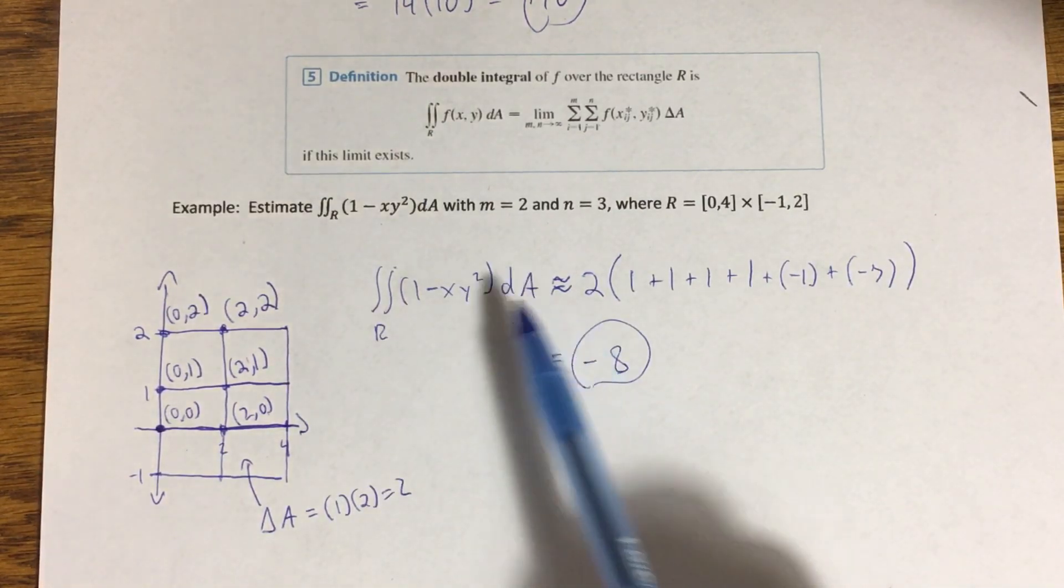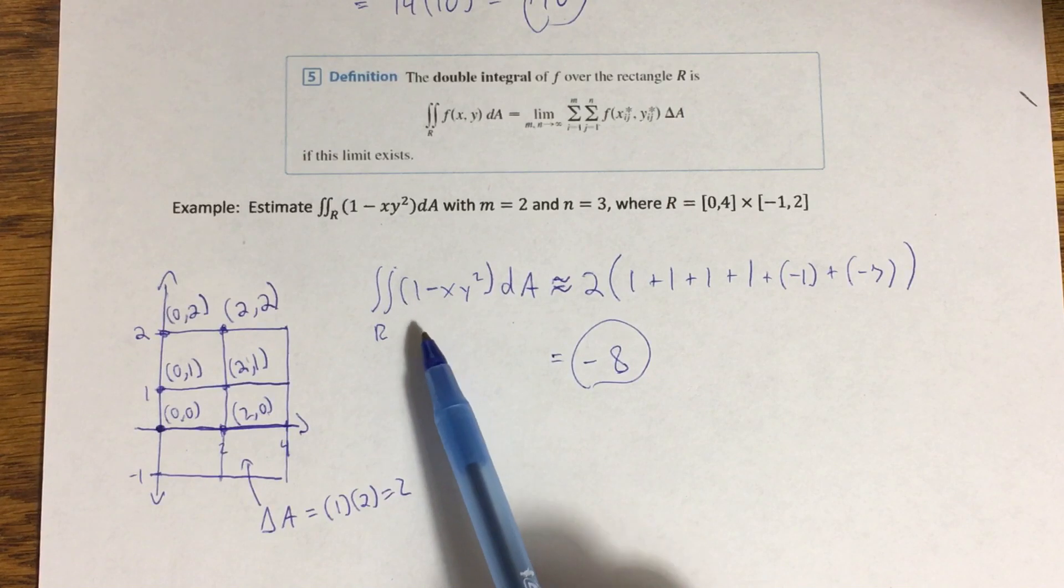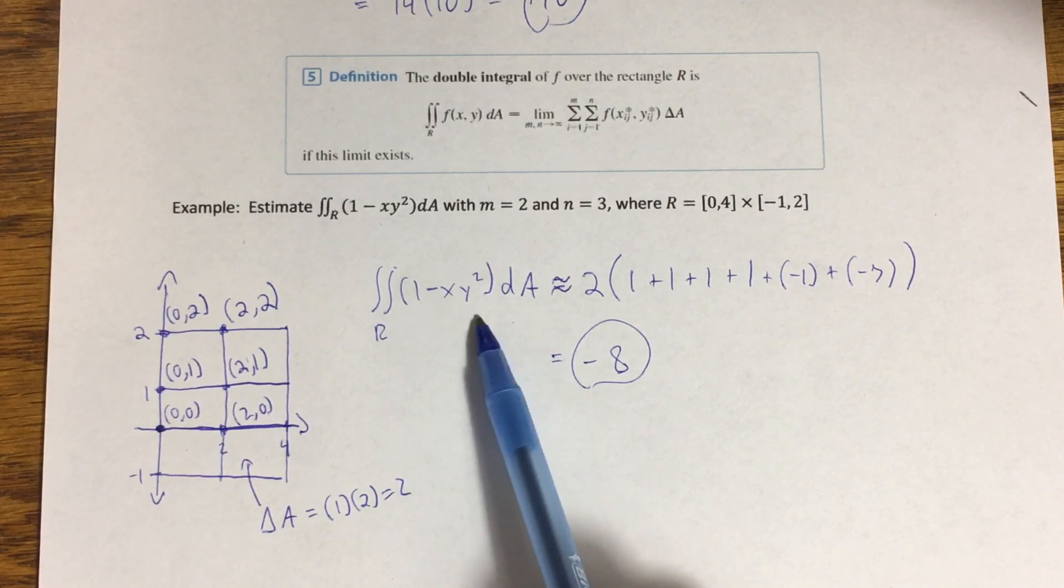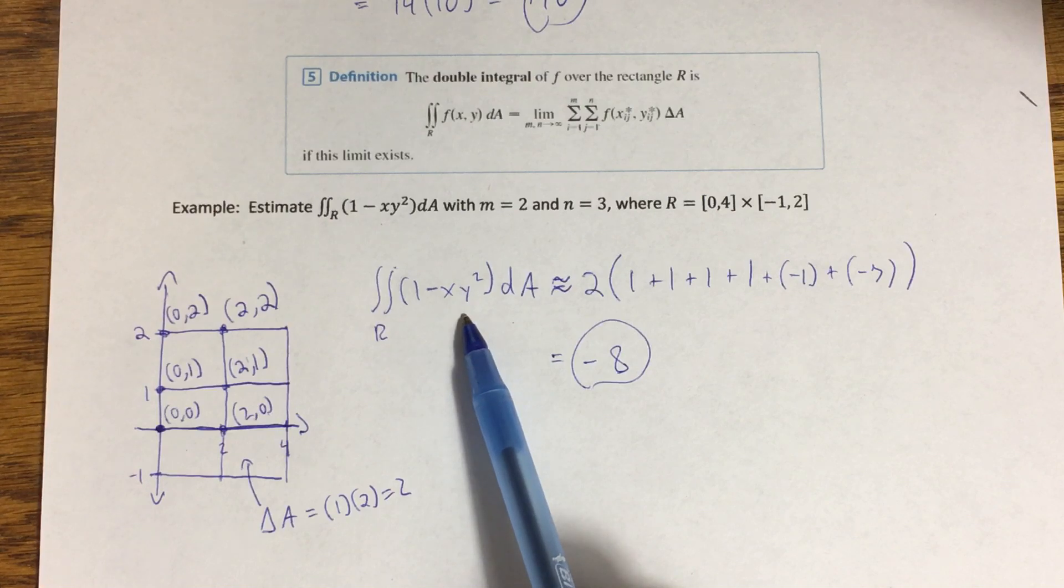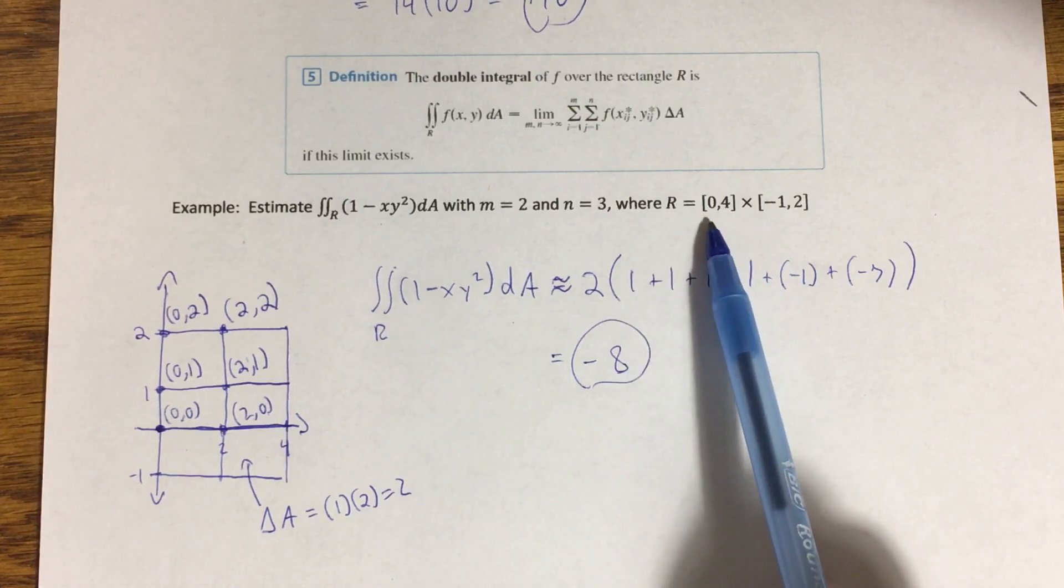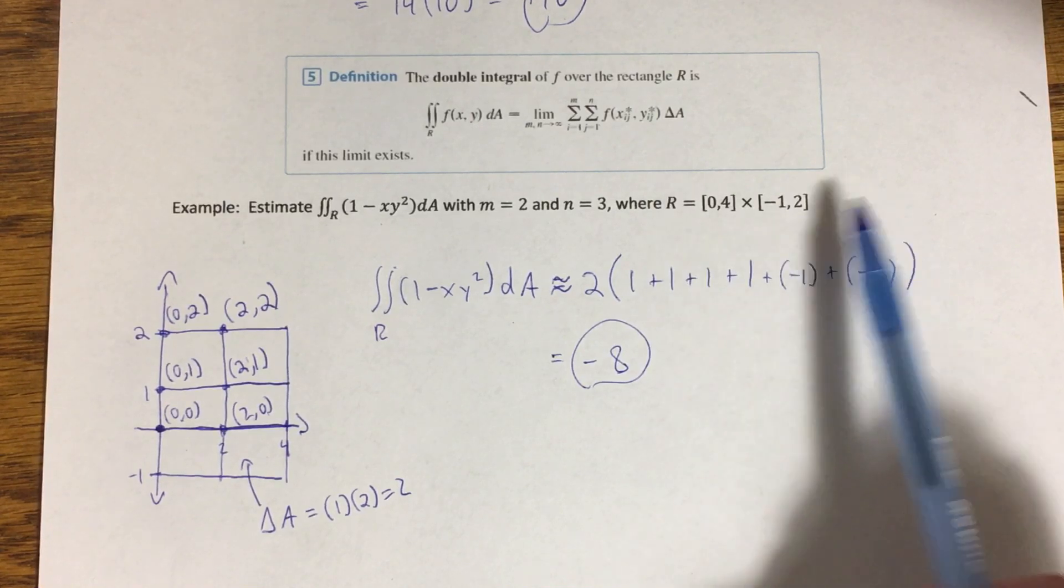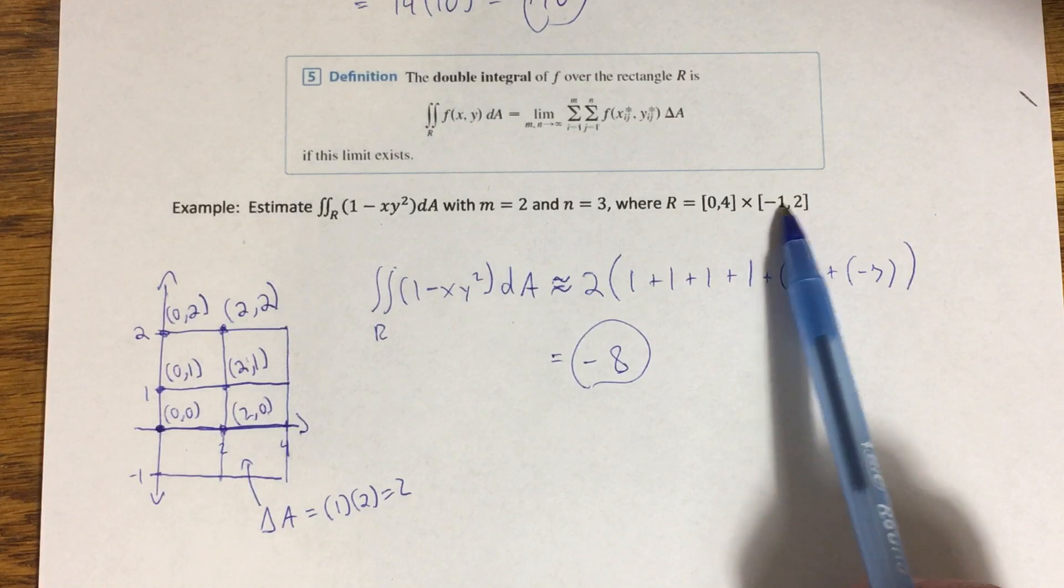So that dA, notice it's not referencing either variable x or y. It's referring to the area of those little sub-rectangles. We'll talk more as we kind of go on in this chapter what we do with that dA, but for now it's just notation.